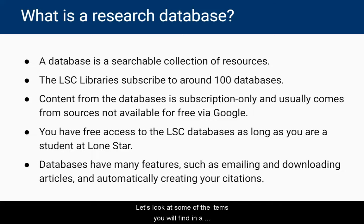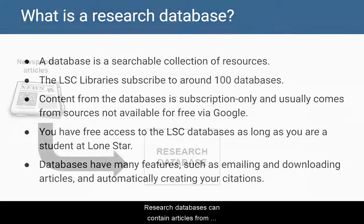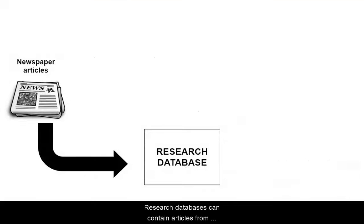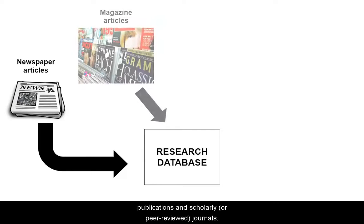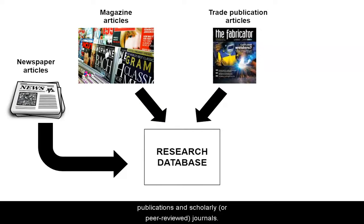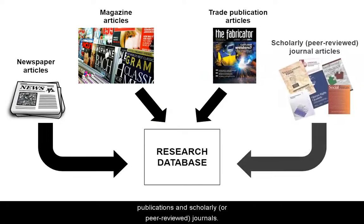Let's look at some of the items you will find in a research database. Research databases can contain articles from newspapers and magazines, as well as professional trade publications and scholarly or peer-reviewed journals.